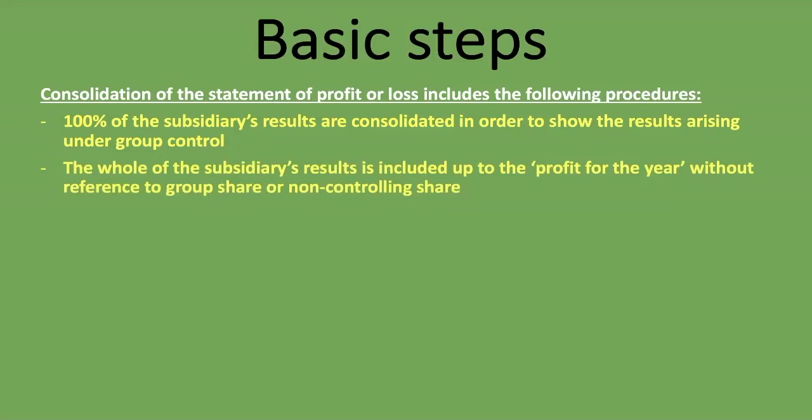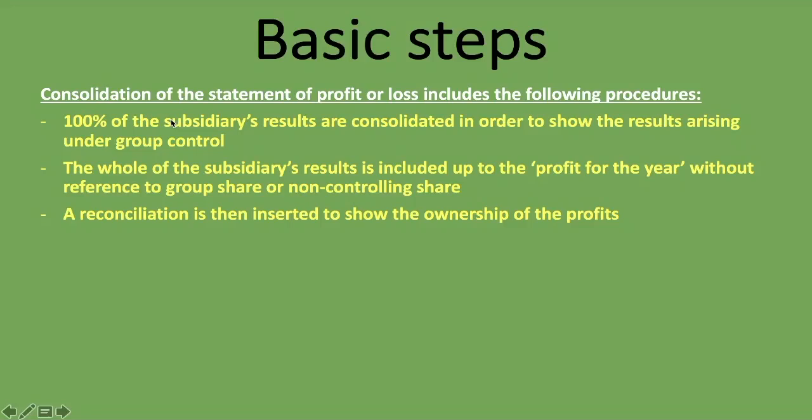The whole of the subsidiary's results is included all the way up to the profit for the year, without reference to group share or non-controlling interest. That means without indicating what belongs to the group and what belongs to the non-controlling interest. A reconciliation is then inserted to show the ownership of the profits.